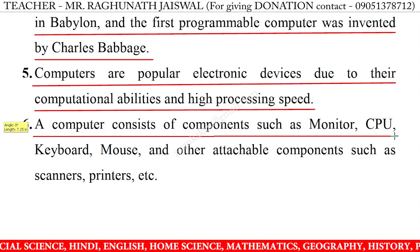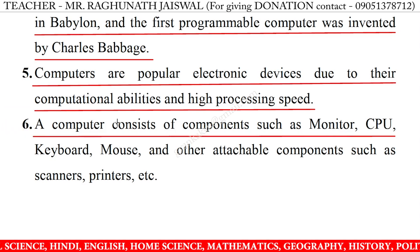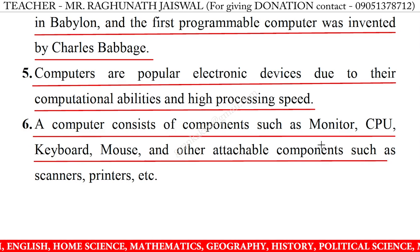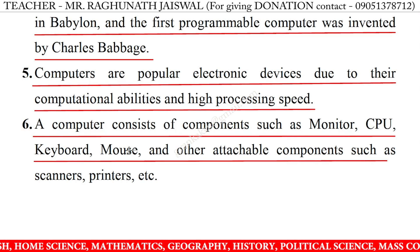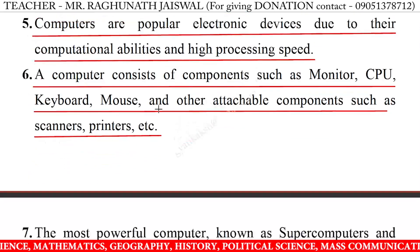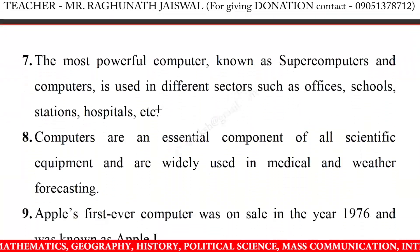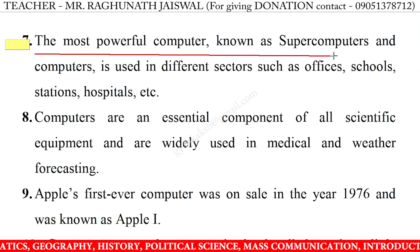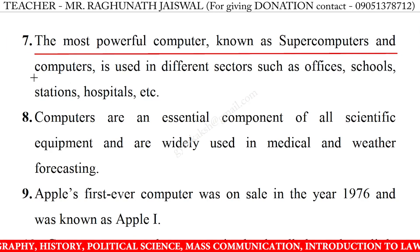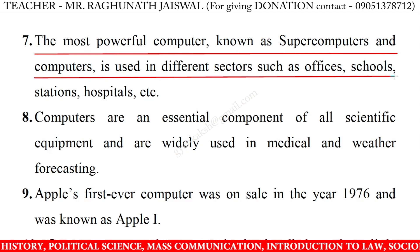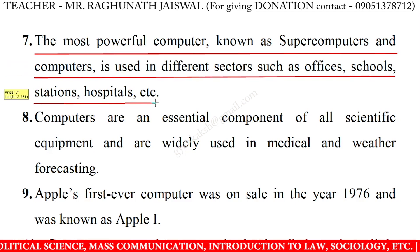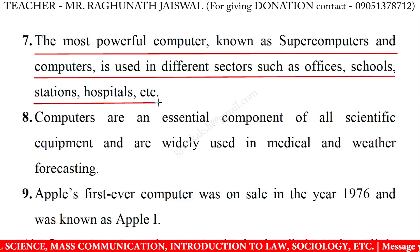6. A computer consists of components such as monitor, CPU, keyboard, mouse and other attachable components such as scanners, printers, etc. 7. The most powerful computer is known as a supercomputer, and computers are used in different sectors such as offices, schools, stations, hospitals, etc.